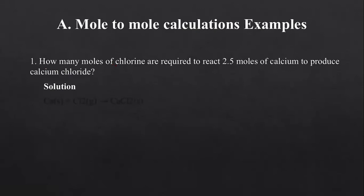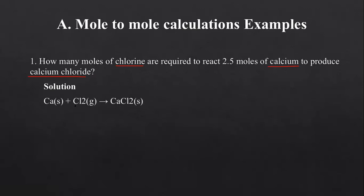How many moles of chlorine are required to react 2.5 moles of calcium to produce calcium chloride? Remember from way back, we looked at how to write chemical equations — converting a chemical sentence into a chemical equation. They are saying chlorine reacts with calcium, so if we write an equation, it is calcium plus chlorine giving us calcium chloride. It is very important that you know how to write these chemical equations and always ensure that they are balanced with their chemical symbols.